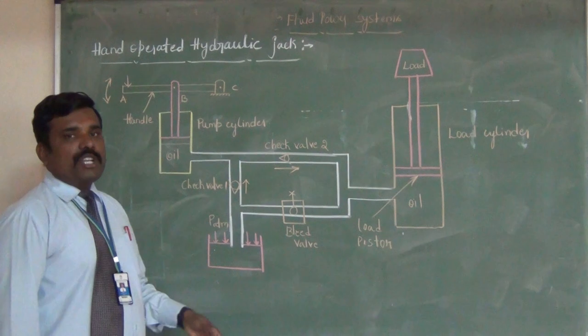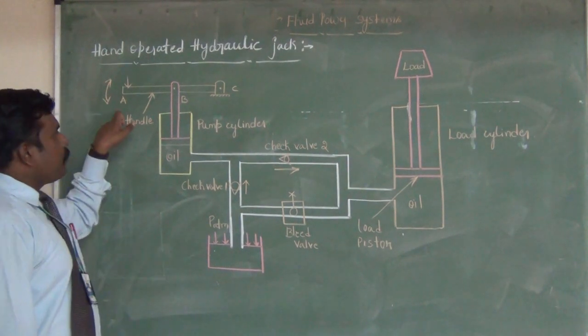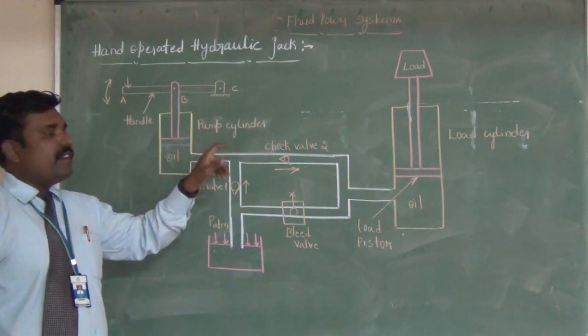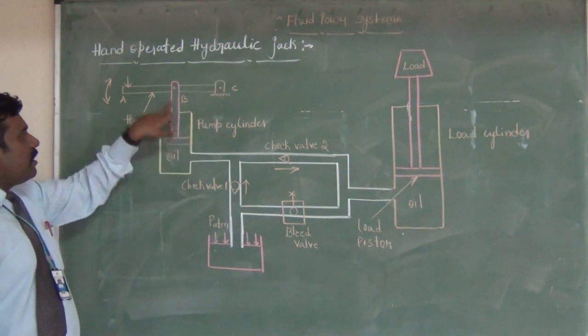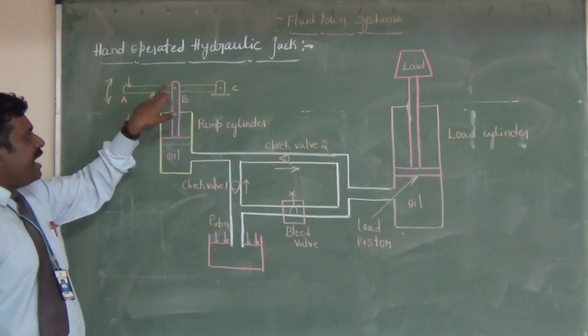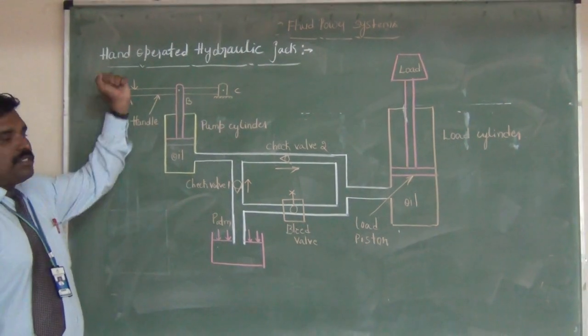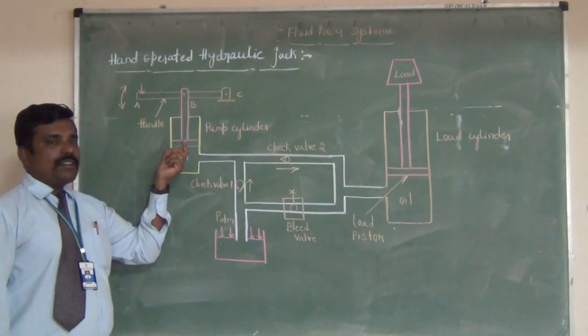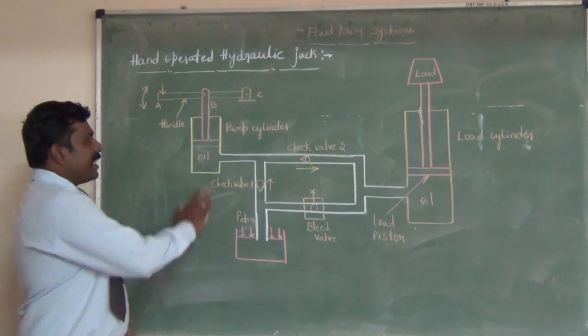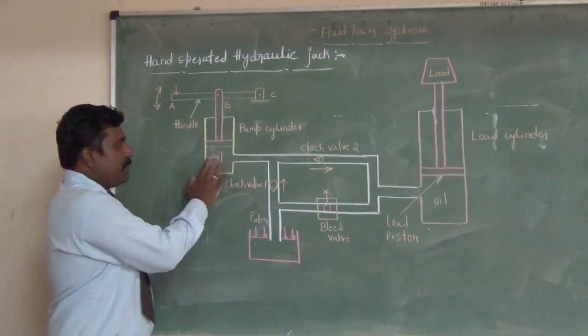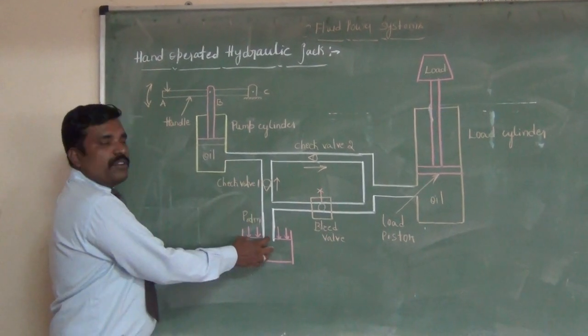Here, the handle has been moved and the rod of the pump cylinder is attached to the hand lever. When I'm going to pull this, the piston of the pump cylinder is going to come out. During that time, a vacuum will be created here. Because of that, it's going to suck the fluid from the reservoir.